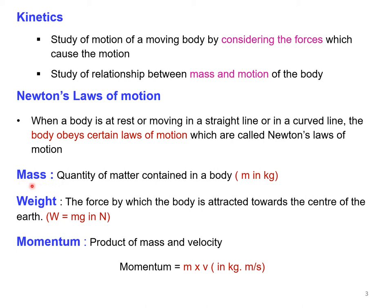The first definition is mass, which we discussed in the introduction class of engineering mechanics. Mass is the quantity of matter contained in a body, represented as m, and the unit of mass is kilogram. Weight is the force by which the body is attracted towards the center of the earth — it is related to gravity. Weight w equals m times g, where g is the acceleration due to gravity in meters per second squared. Therefore, 1 Newton equals 1 kg·m/s².